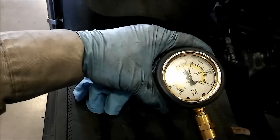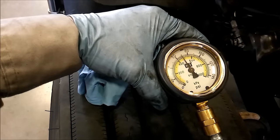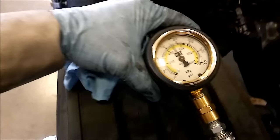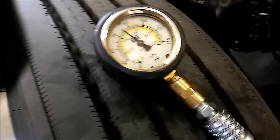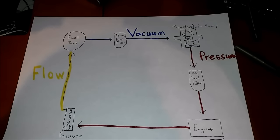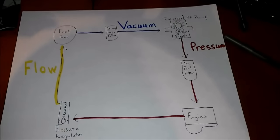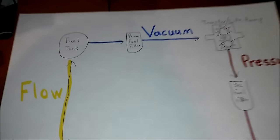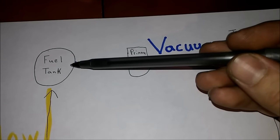Here we have another C15 and it's running at idle. We're pumping about 70 PSI, which is a little low for a C15 typically at idle, but this engine is running fine. So here we're going to be showing you this fuel diagram and going over how the fuel system works. As you can see, I did not go to art school — I went to diesel school.